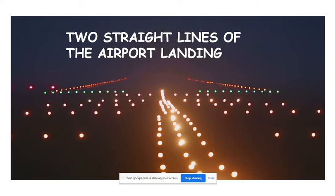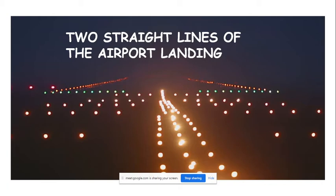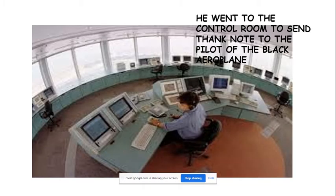After a few twists and turns, he suddenly found himself coming out from the black clouds. Below him he saw two straight lines of lights — which looked like an airport landing strip. You can see how airport landing lights look — the poet found himself near the airport landing strip.